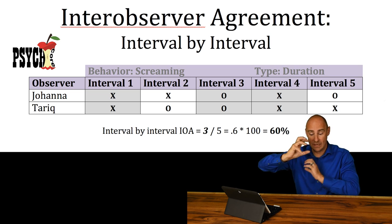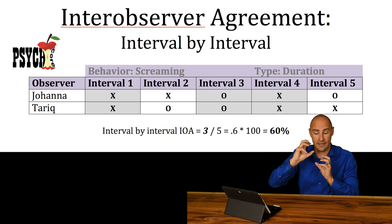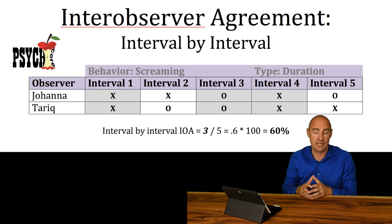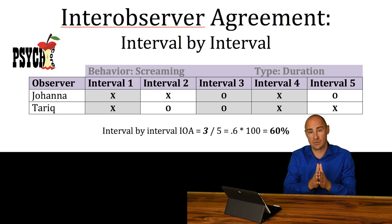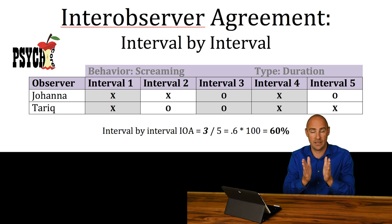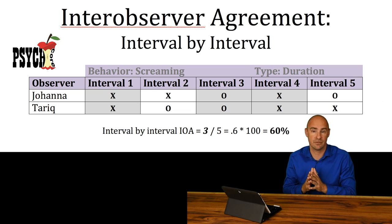If they agreed — in this case we had three intervals, they agreed two out of three times, so roughly 66% agreement. Because we take the total number of agreeing intervals and divide it by the total number of intervals overall.